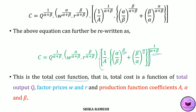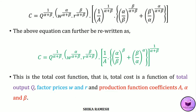This total cost function is a function of the total output Q, the factor prices w and r, and the production function coefficients A, α, and β. If you like the video, do subscribe to my channel and share the videos. Thank you.